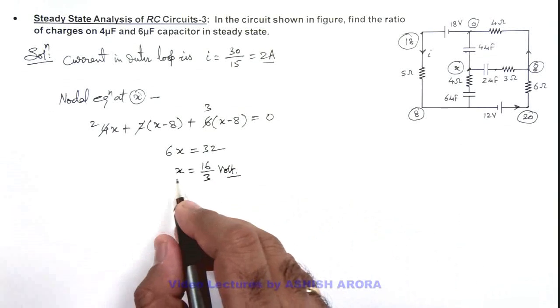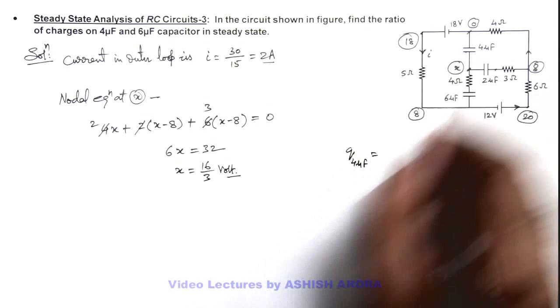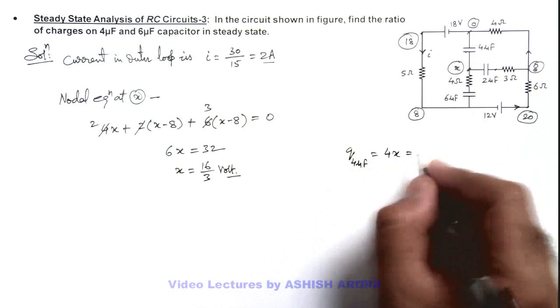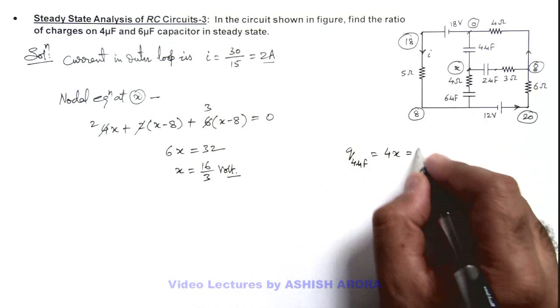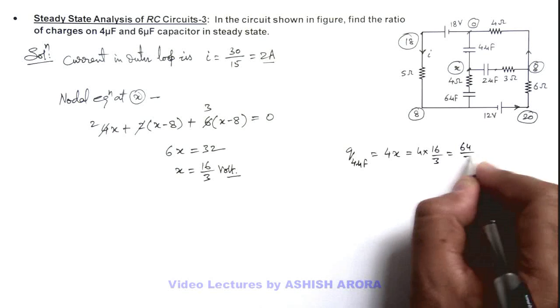As we have got the value of x, we can find out the charge on 4 microfarad capacitor which can be given as 4x. So this will be 4 multiplied by 16 by 3, this is 64 by 3 microcoulomb.